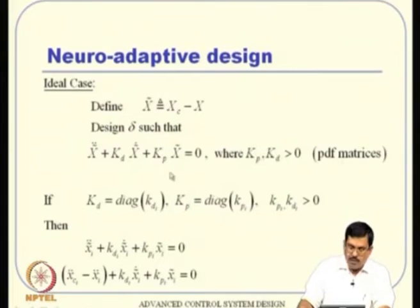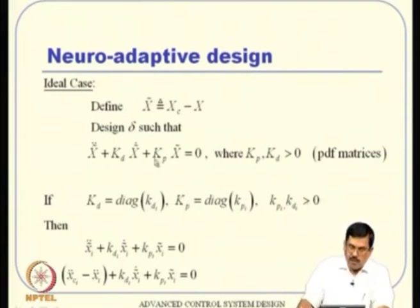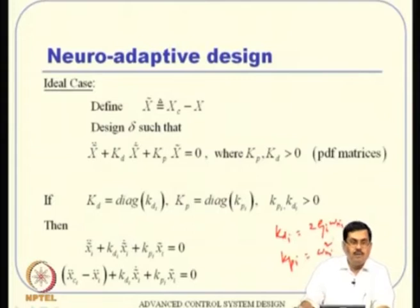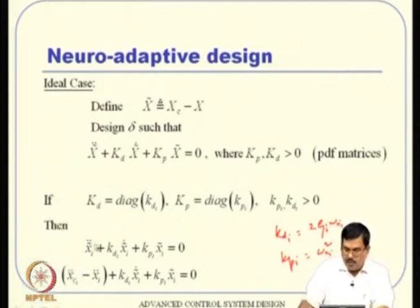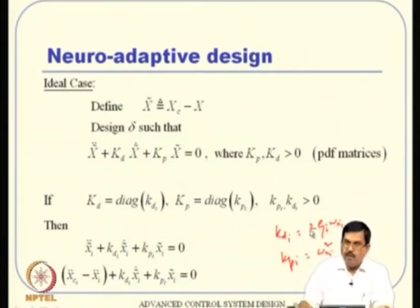One way to select K_P and K_D as positive definite matrices is to choose them as diagonal matrices. Typically, the i-th diagonal element K_Di is selected as 2*zeta_i*omega_ni and K_Pi as omega_ni^2, which gives the standard second-order form: X_tilde_i_double_dot + 2*zeta_i*omega_ni * X_tilde_i_dot + omega_ni^2 * X_tilde_i = 0. The parameters zeta_i and omega_ni are chosen to meet performance objectives like settling time and percentage overshoot.